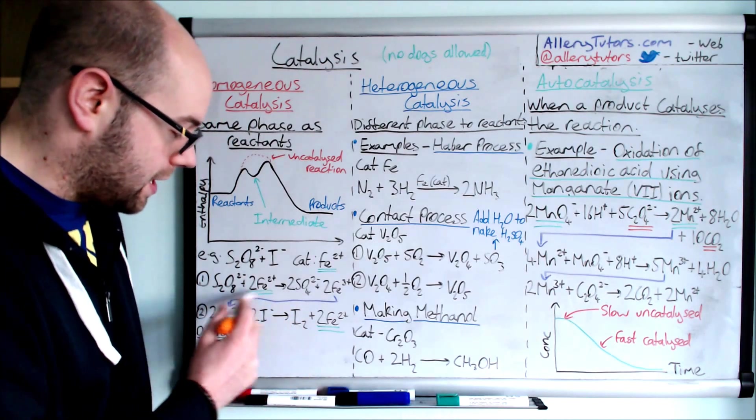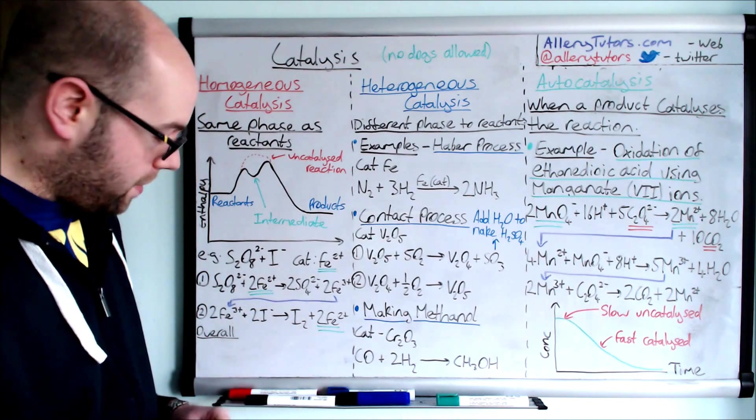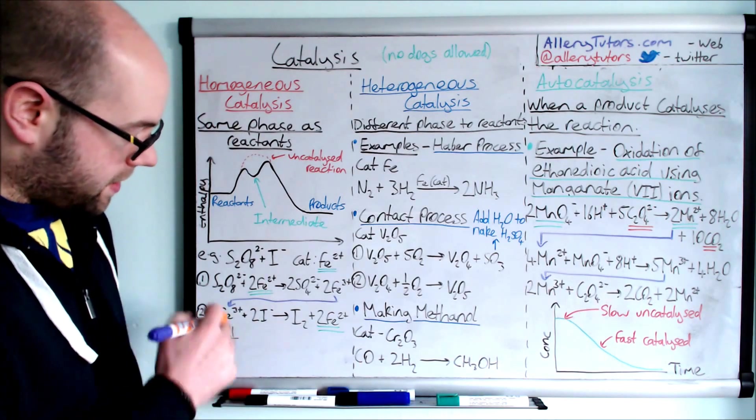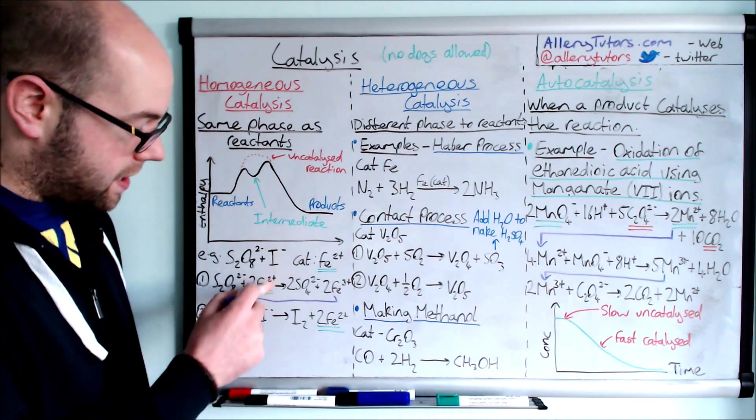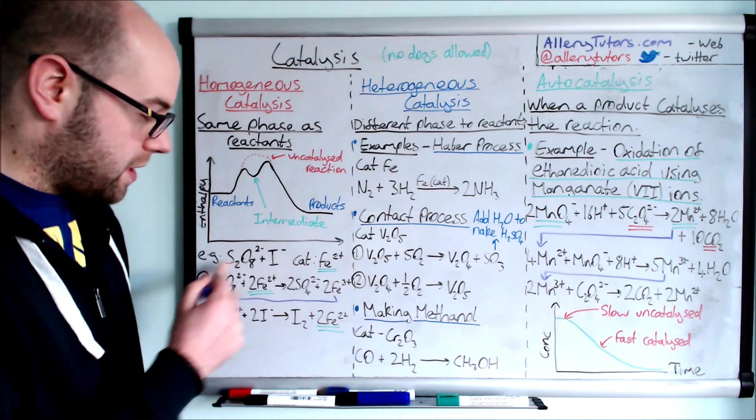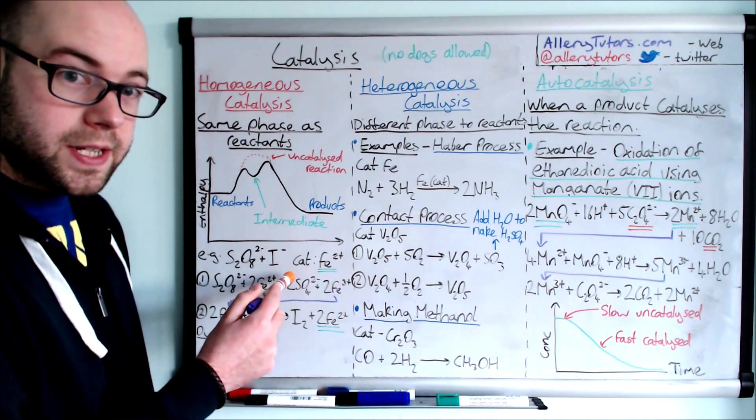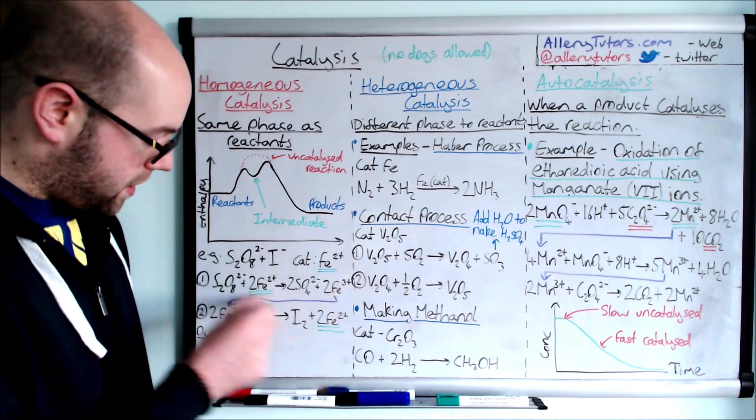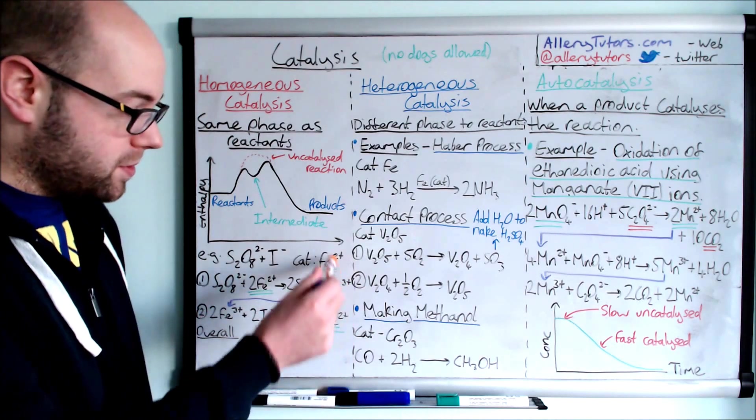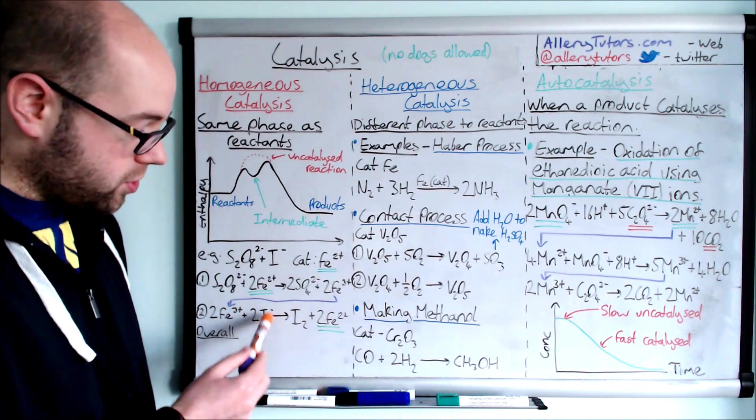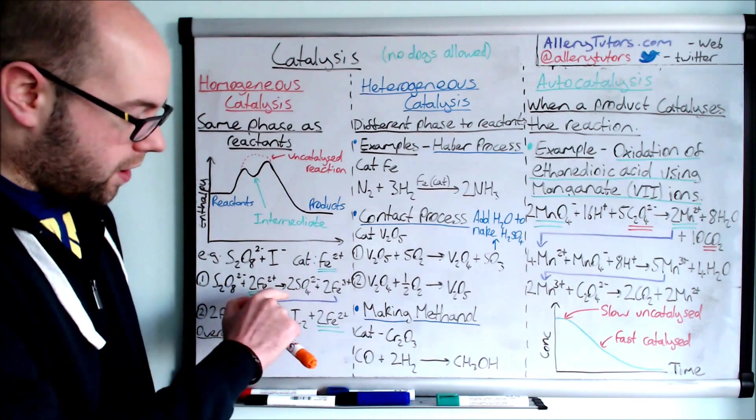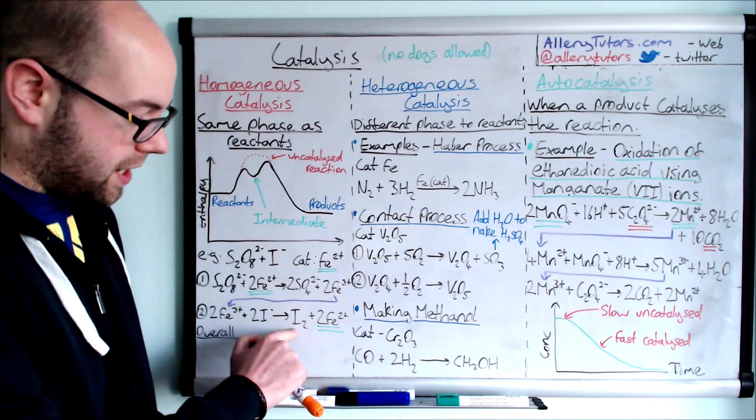And this Fe3+ reacts again, secondly with the I-. If we look at this in terms of oxidation states, the iron has been oxidized to Fe3+ and the peroxodisulfate has been reduced to sulfate ions. Then the iron 3 is reduced back to Fe2+, the original catalyst. But crucially we're forming two products: SO4 2- and I2.